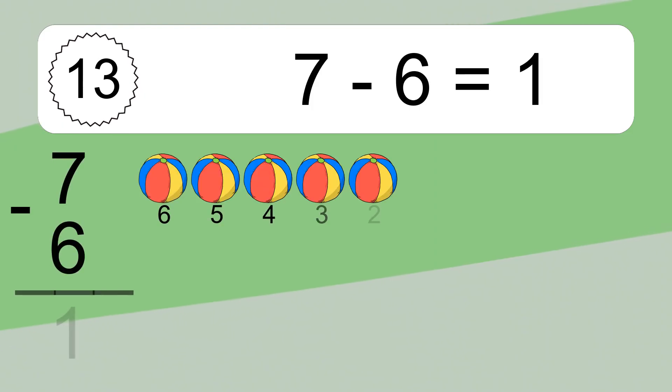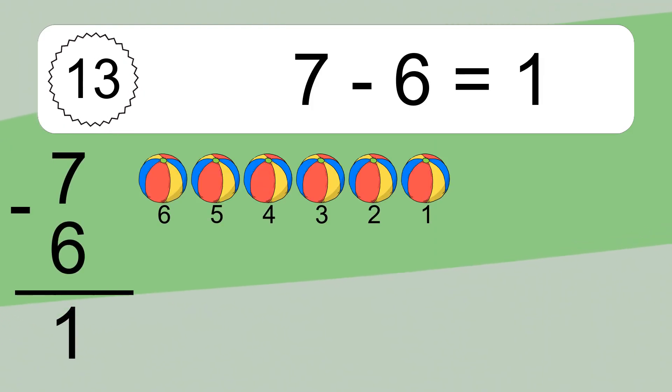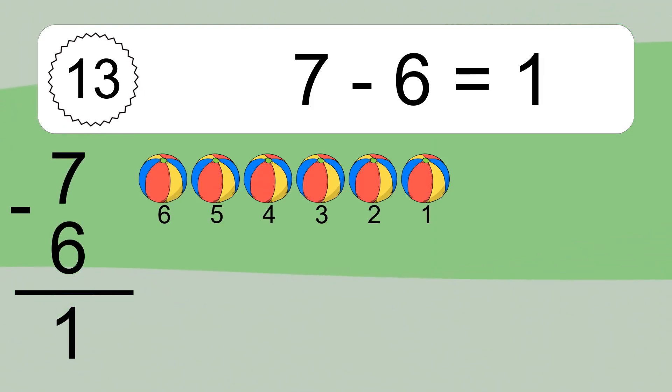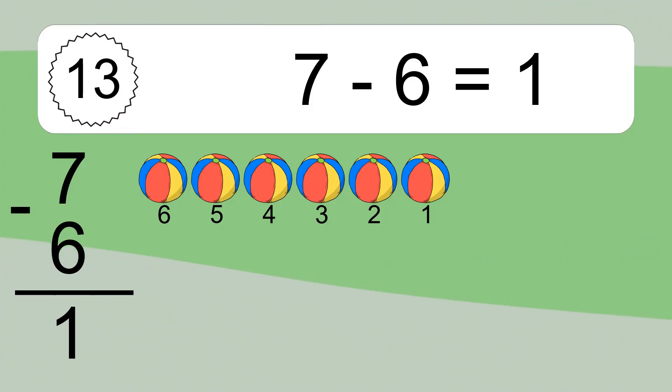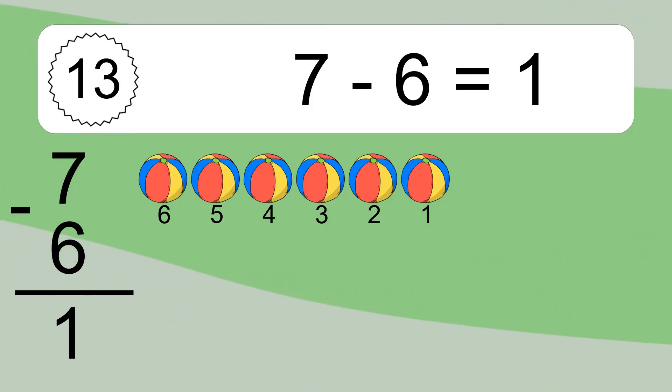7 minus 6 equals 1. Let's count it: 6, 5, 4, 3, 2, 1.